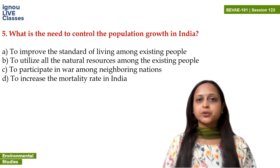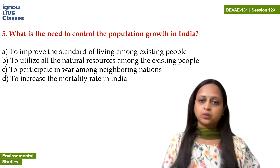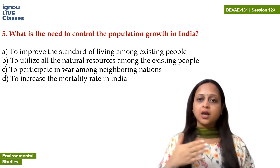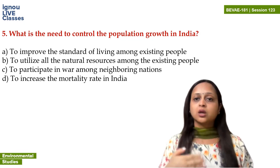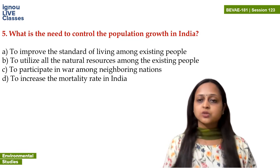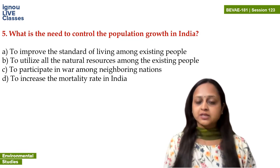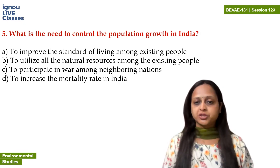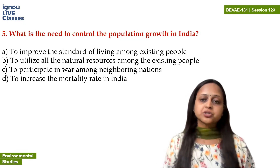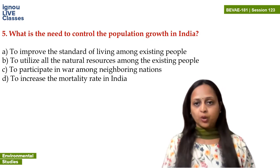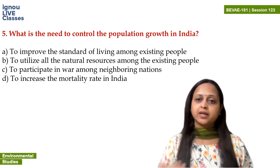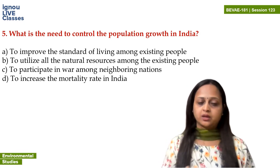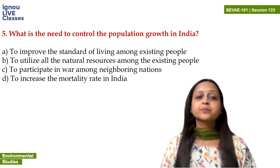What is the need to control population growth in India? From all the questions we've done so far, we found that people are not getting employment, people's food lacks nutrients, people are malnourished — all of these things are happening because population is growing. So if we control the population, employment will increase, the economy will grow, people will get food — you could say balanced diet will be available and malnutrition won't happen. So now let's read the options.